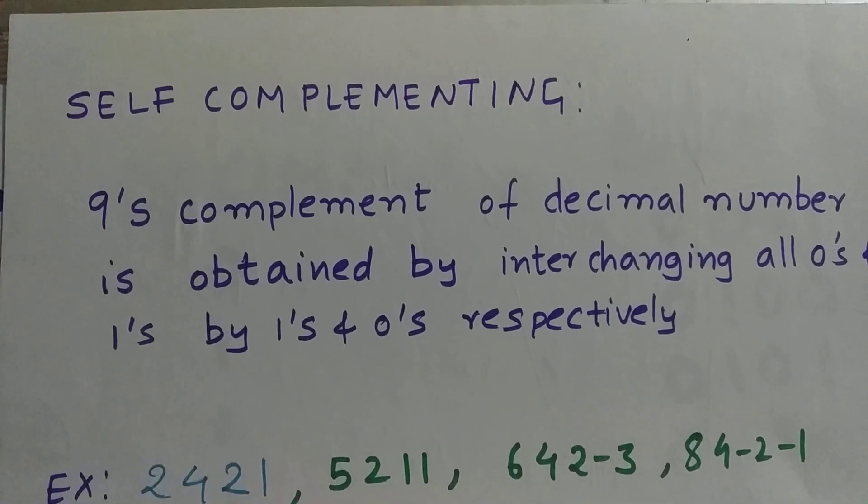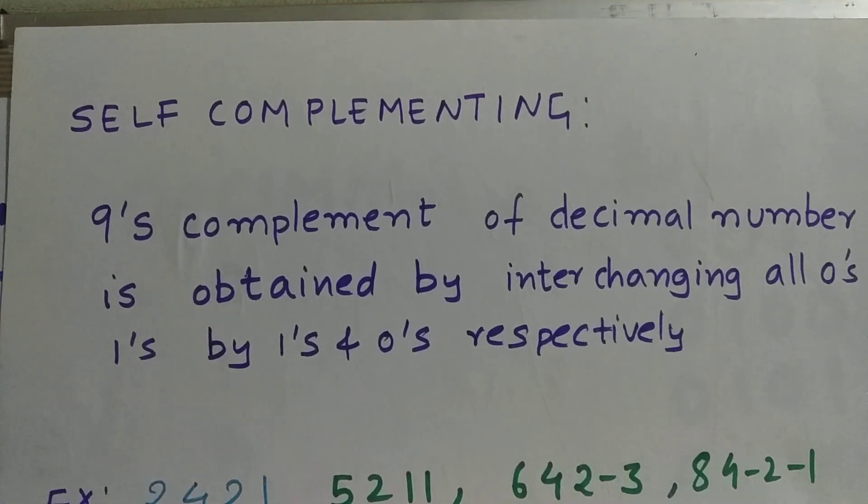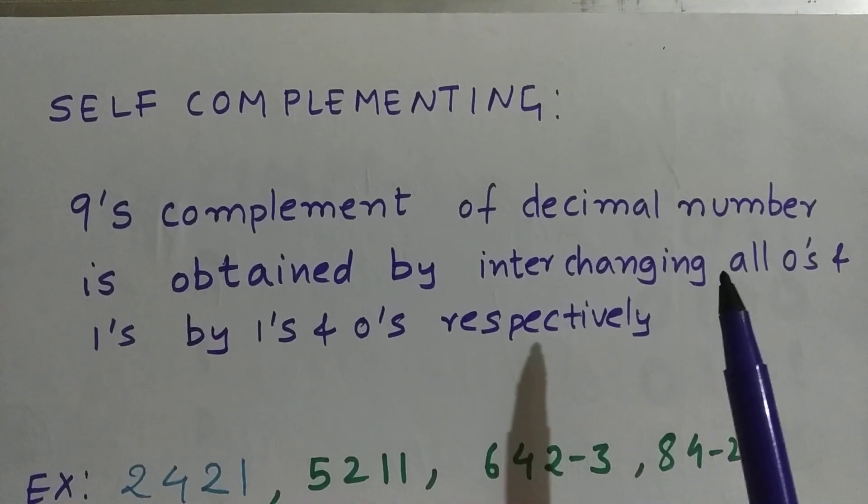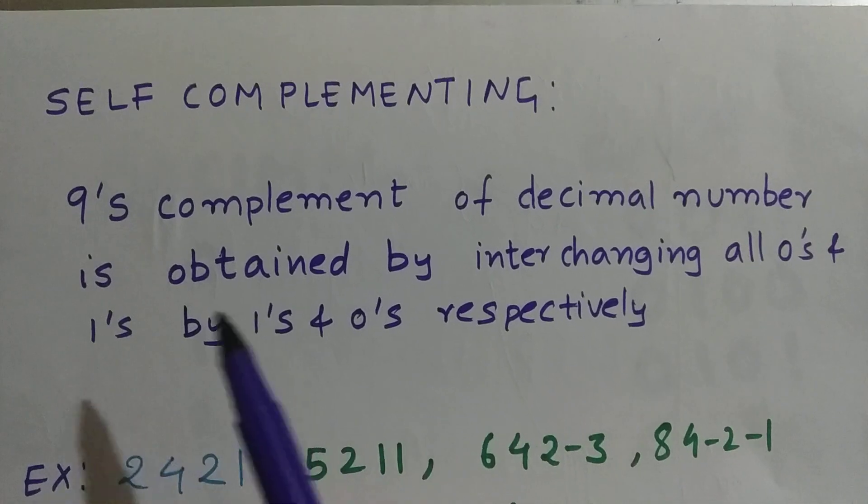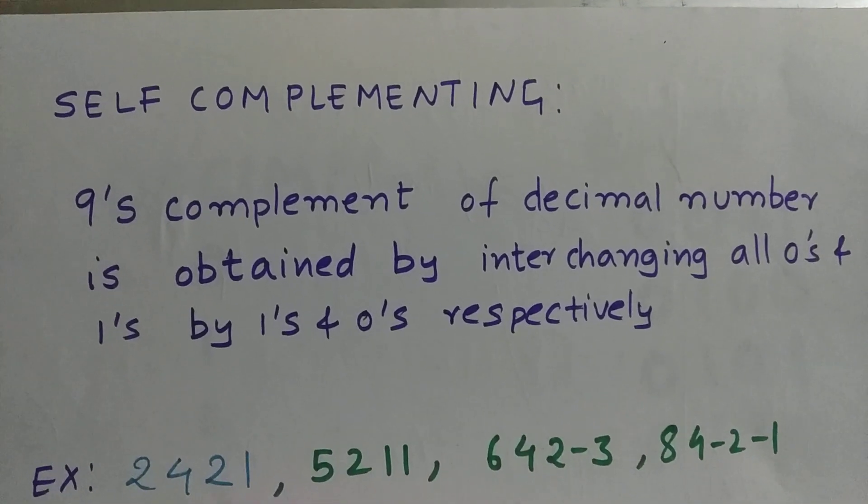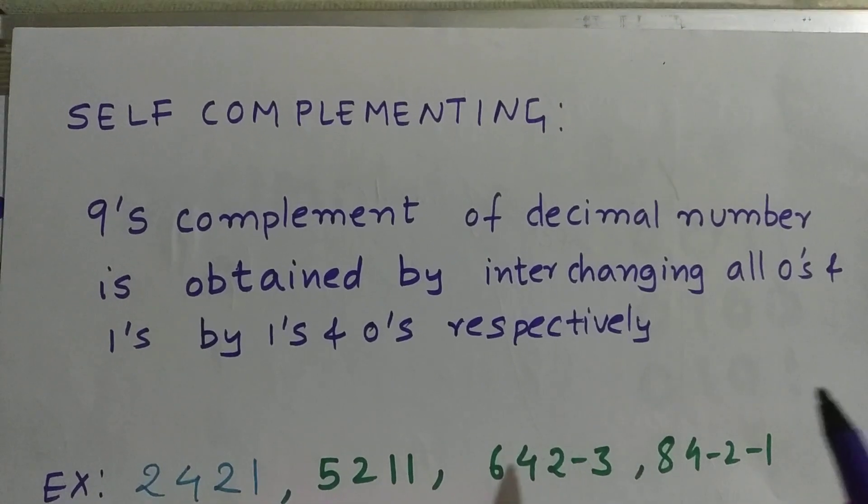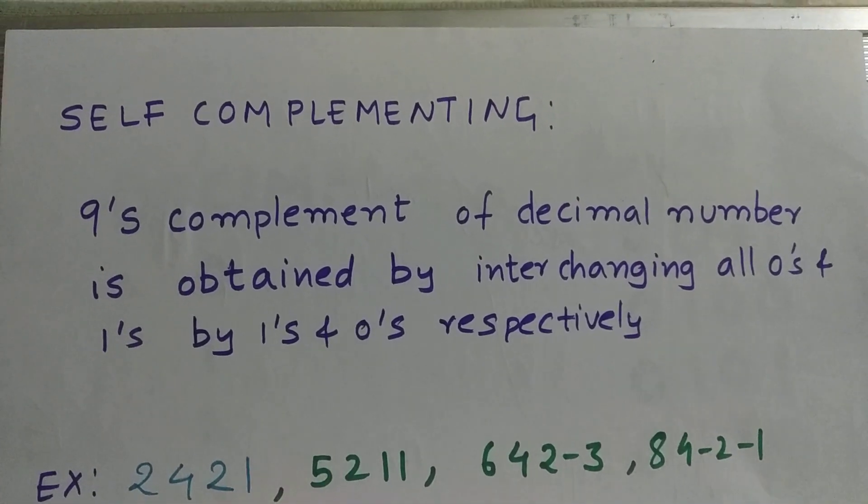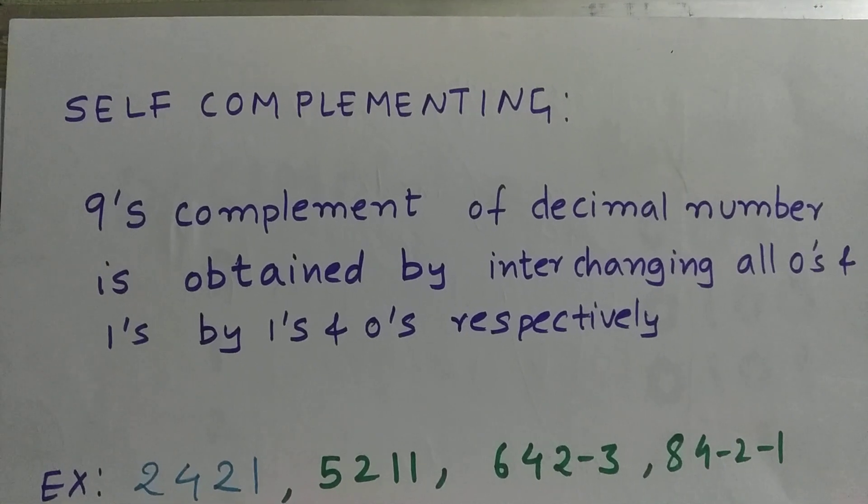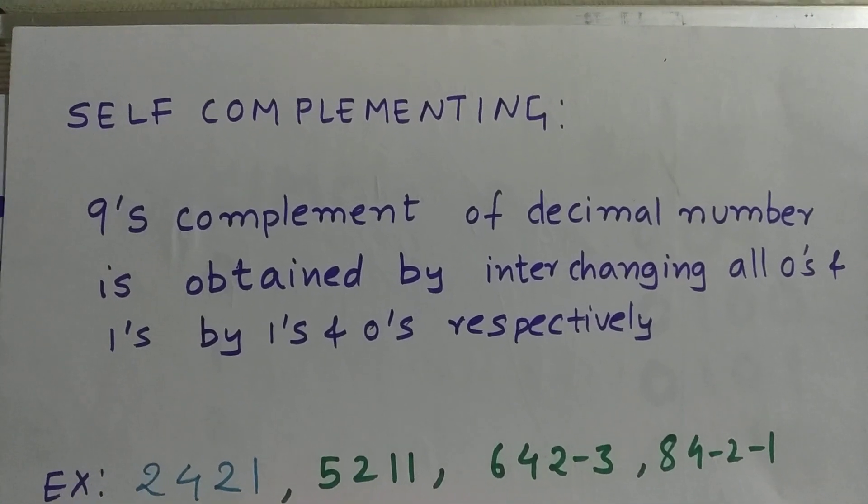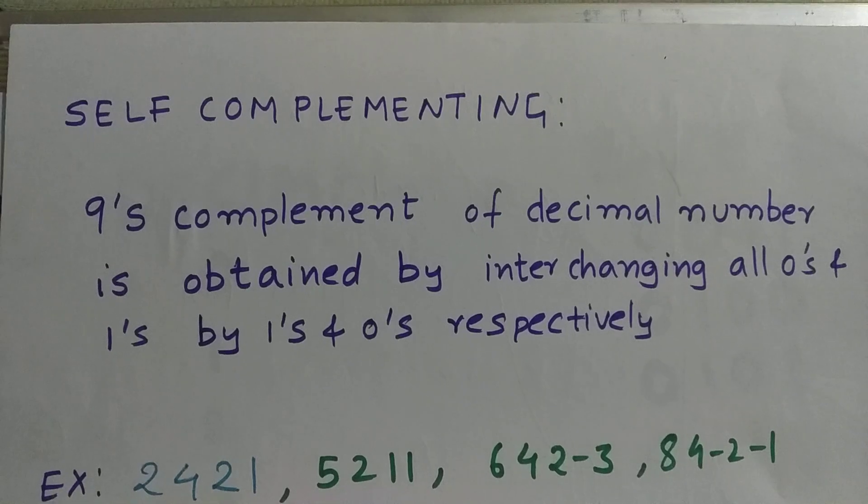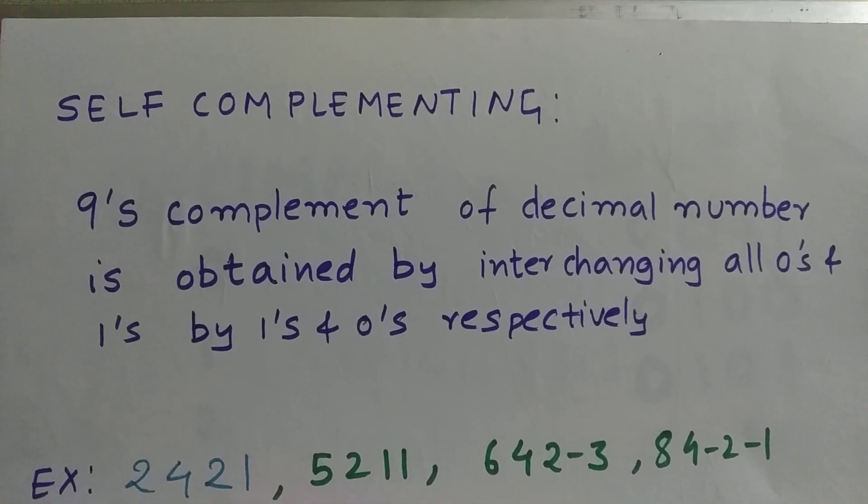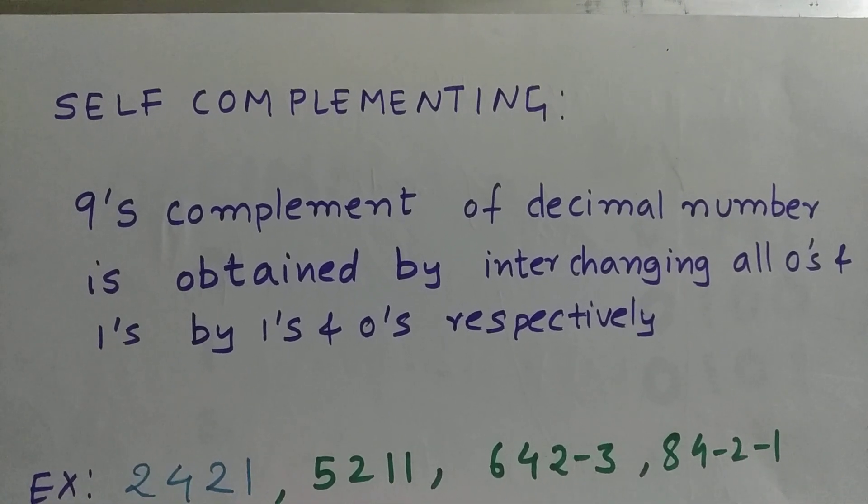Self-complementing code definition is as shown here. Its 9's complement of a decimal number is obtained by interchanging all 0s and 1s by 1s and 0s respectively. You can see interchanging all 0s and 1s by 1s and 0s respectively is nothing but 1's complement. So this definition states that if 9's complement of a decimal number equals 1's complement, then it's a self-complementing code.